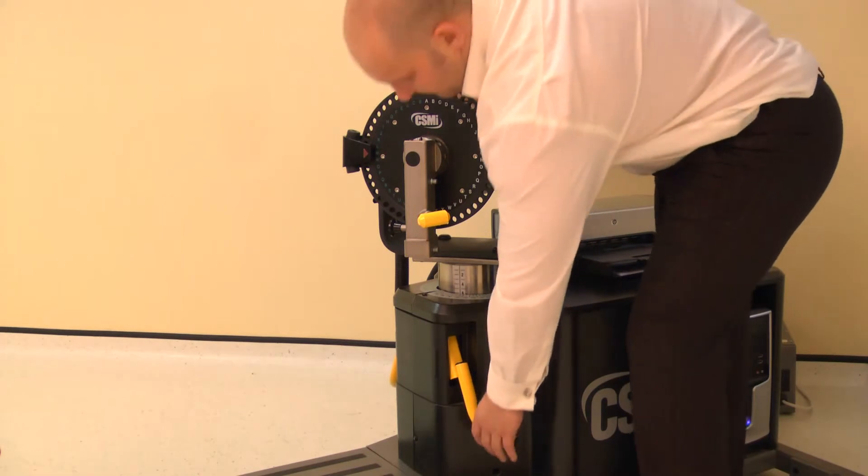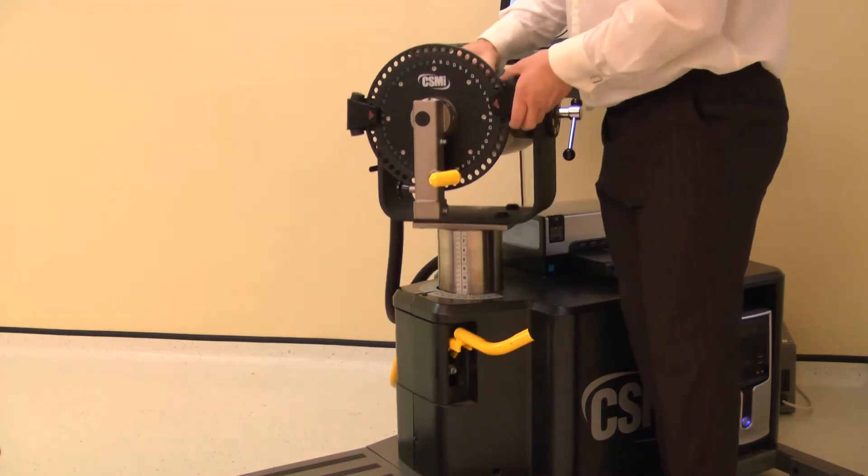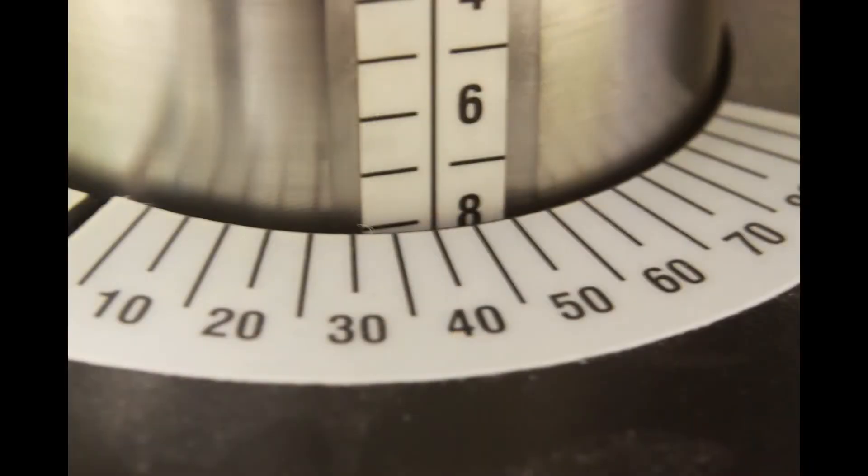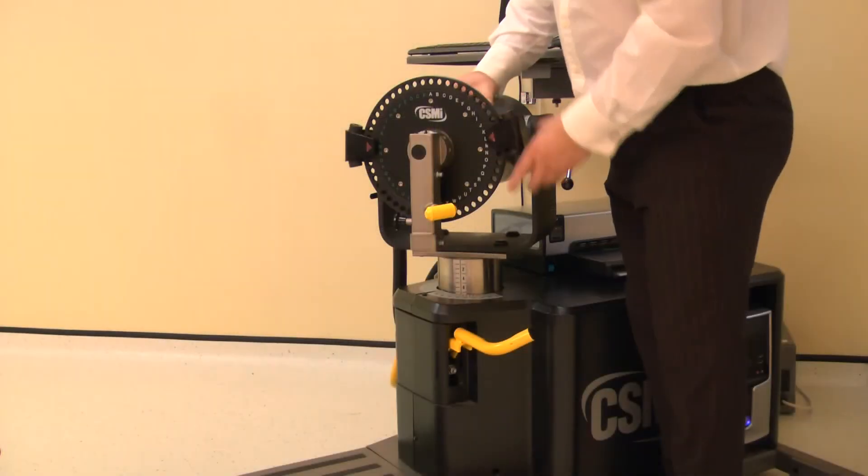The dynamometer height and rotation are adjusted together. Lift the locking handle to release. For the left knee, rotate the dynamometer to 40 degrees on the black scale, whilst also adjusting the height to 8. Ensure both locking handles are pushed down to secure.